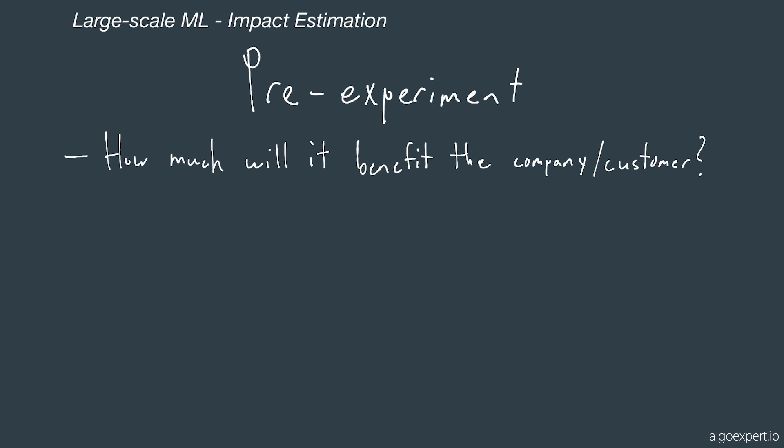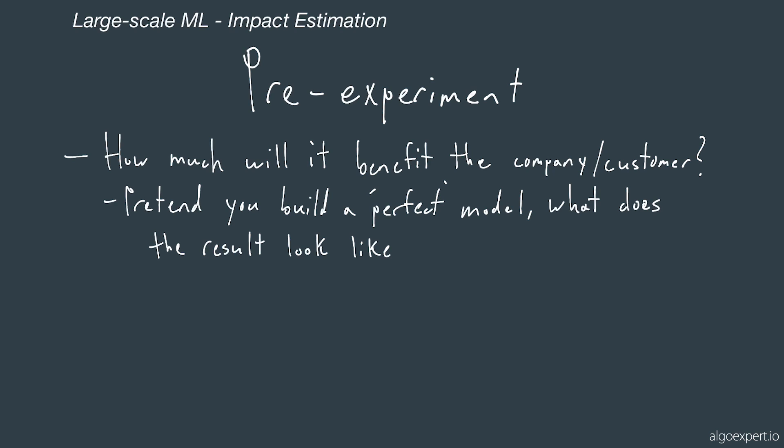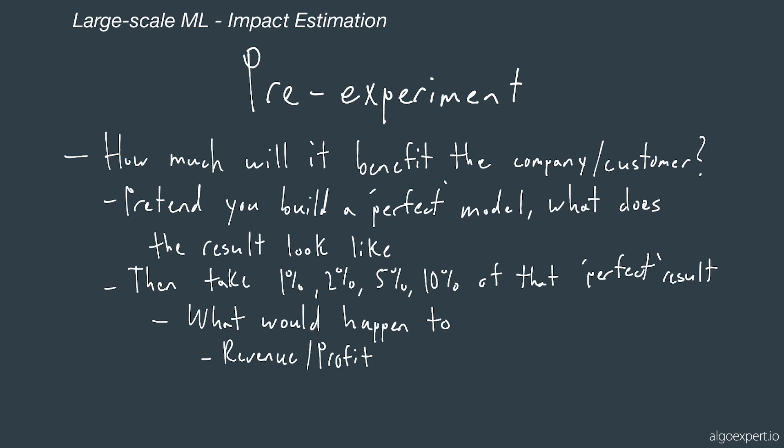Now that we understand approximately how much something could cost, we want to know the potential upside or benefit to the company or customer experience. What I often do is pretend that we build the perfect model — say a machine learning model that gets 100% click-through probability, a 100% sign-up rate, or zero cancellations. I often take a 1%, 2%, 5%, and 10% cut of that perfect result, and then I make sure to relate that to some revenue or profit.